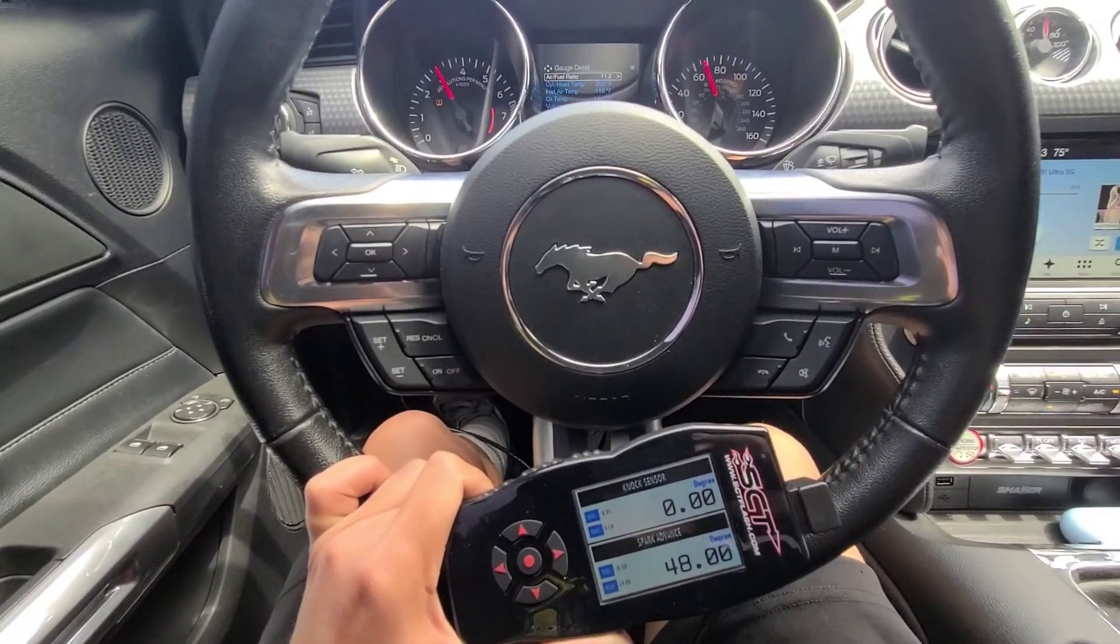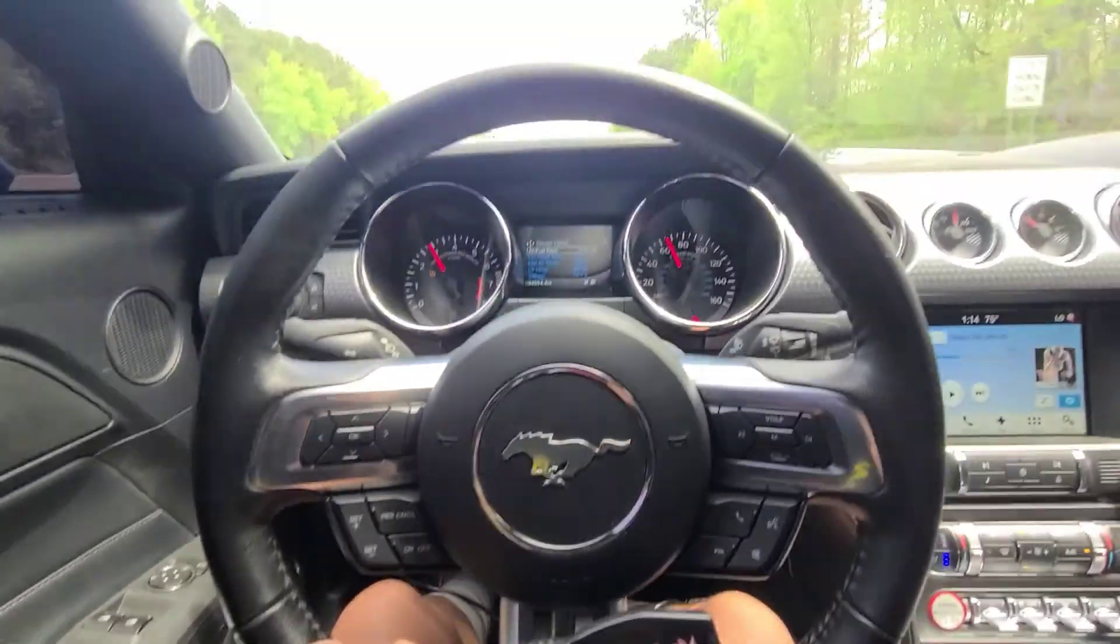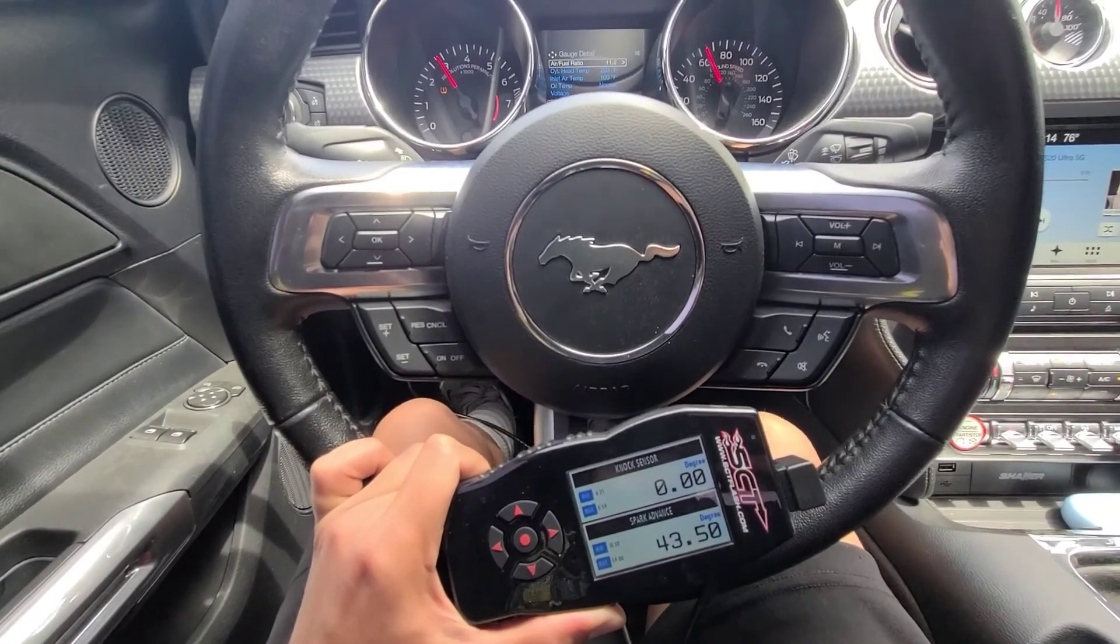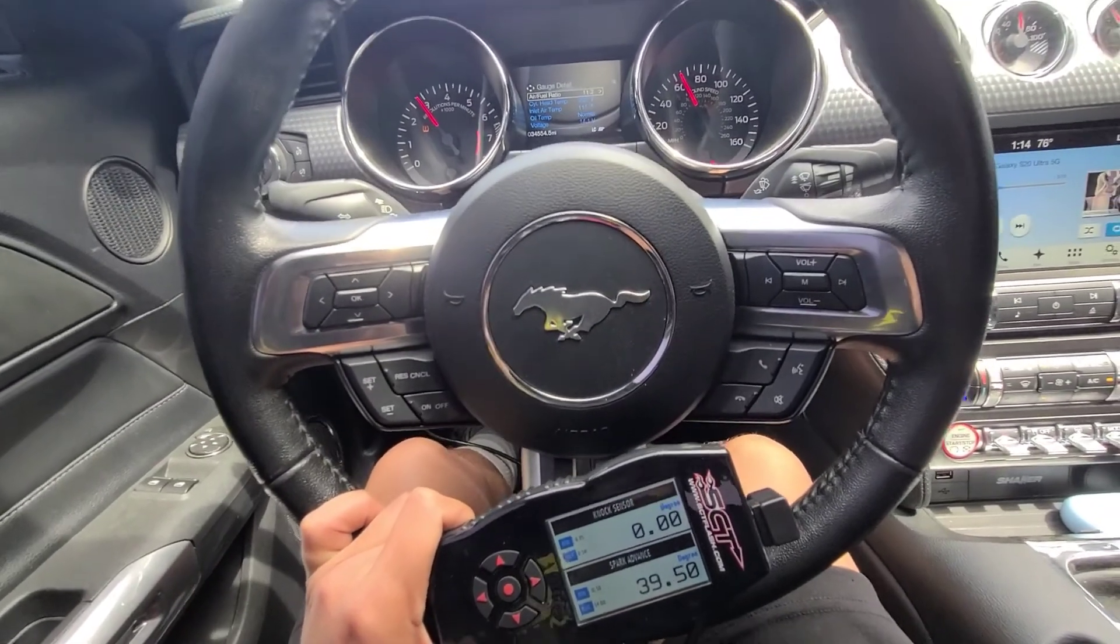You can just get a regular OBD plug tuner and see what your car does naturally. And this is any car, not just a Mustang. I was even doing this when I had my Volkswagen. Light load, here we go. 45 degrees of timing. As load increases, timing will decrease, as you will see here.